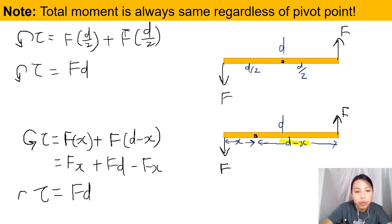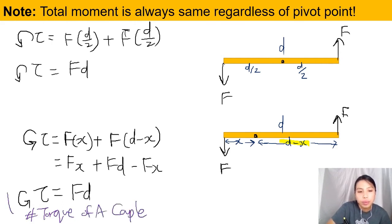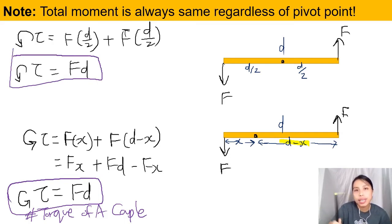so torque of a couple, that's what we call it, torque of a couple, only applies for a couple. So do you see the thing there? No matter where you put your pivot, if it's a couple, you can just shortcut and say F, one of the F, times the distance between the couple. This is great, especially for very complicated problems when it's just too much to calculate and if they tell you it's a couple, then, whew, saves time. You'll straight away calculate it.